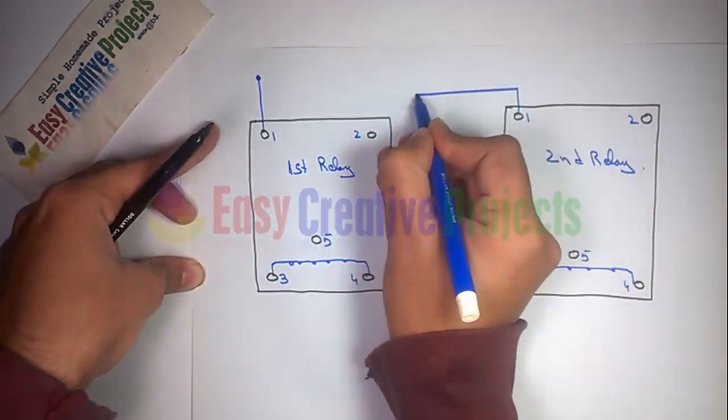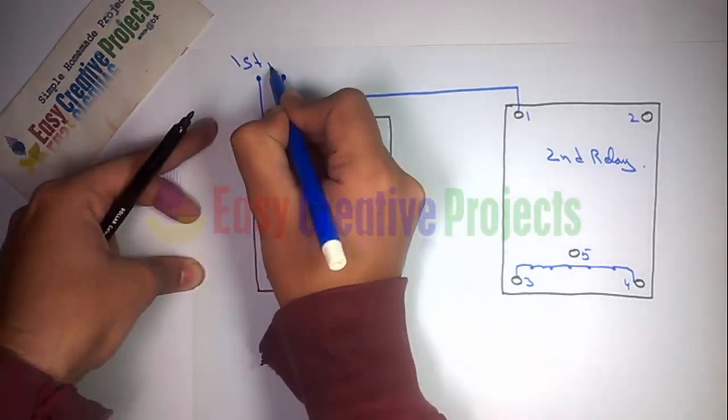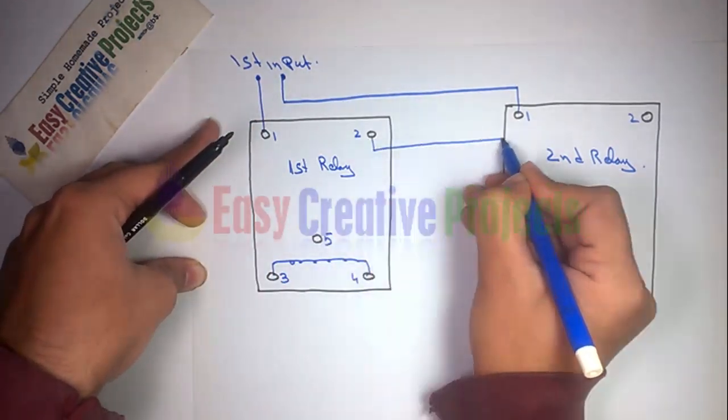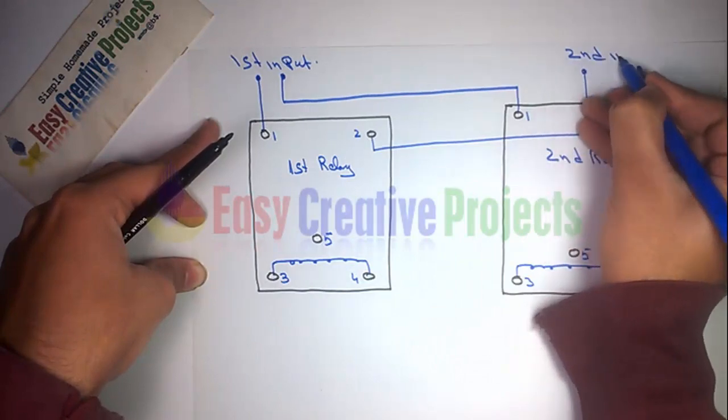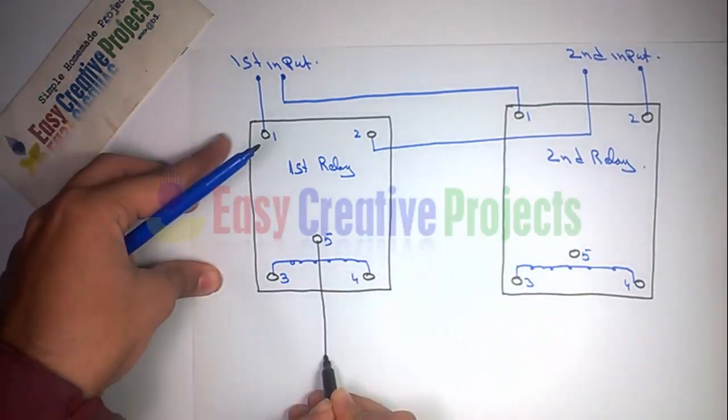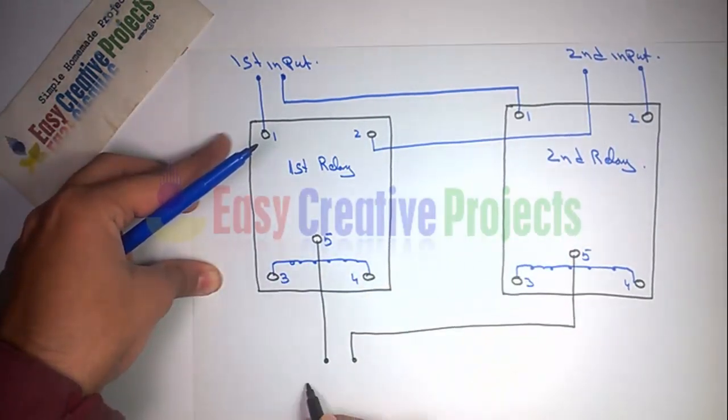Both relay first pin use for first input and both relay second pin use for second input like diagram. Both relay fifth pin use for output.